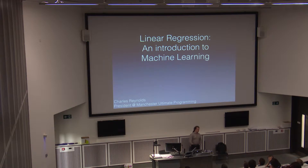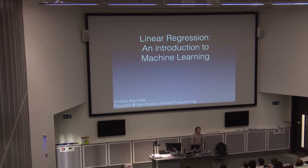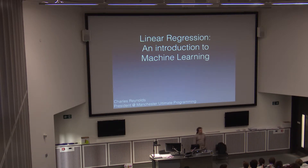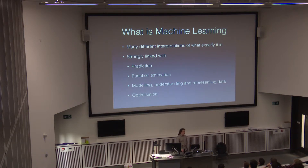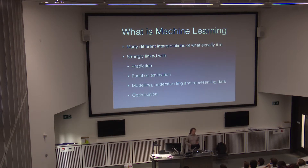Does anyone know what machine learning is? People generally argue about what it really is. It has ties to several different things like statistics and optimisation theory. It's often to do with predicting some kind of information given another kind, estimating functions, or modelling and understanding different kinds of data.